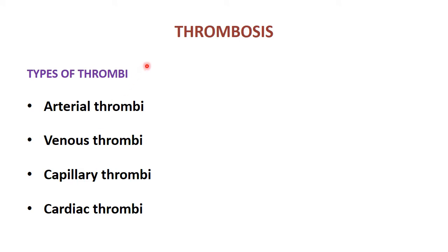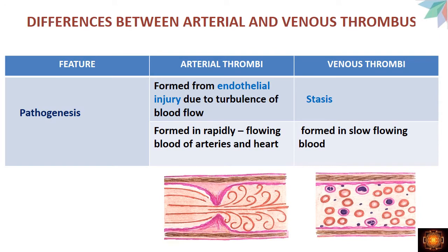There are four types of thrombi: arterial thrombi, venous thrombi, capillary thrombi, and cardiac thrombi. When comparing arterial and venous thrombi, everything is different — the pathogenesis and morphology. Regarding pathogenesis, arterial thrombi are mainly formed from endothelial injury. If you remember, the main causes in Virchow's triad are endothelial injury, altered blood flow, or hypercoagulability.